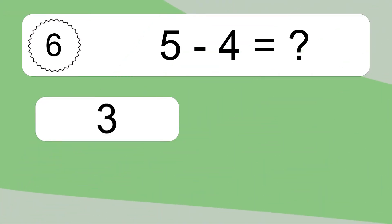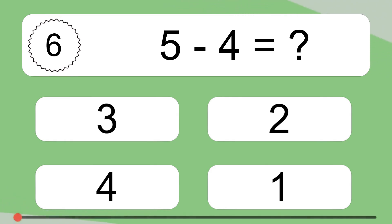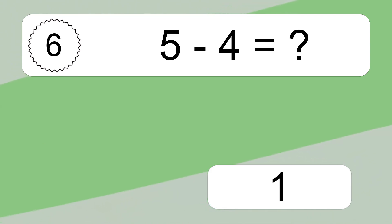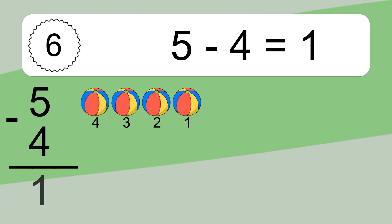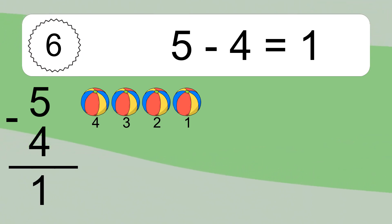5 minus 4 equals what? 5 minus 4 equals 1. Let's count it: 4, 3, 2, 1.